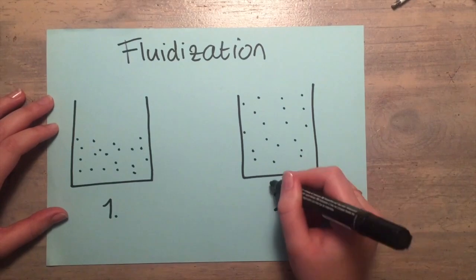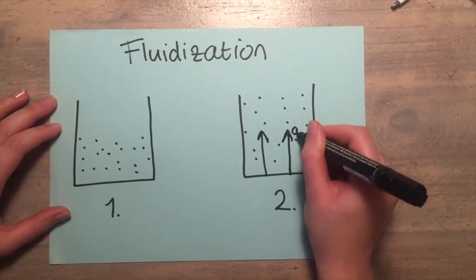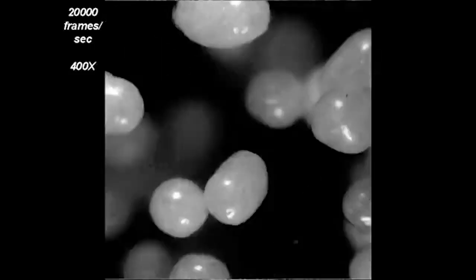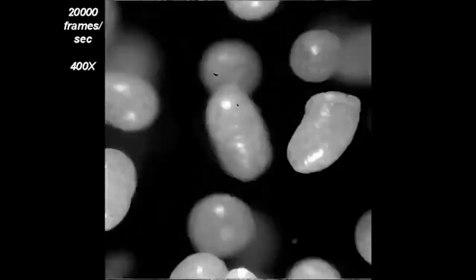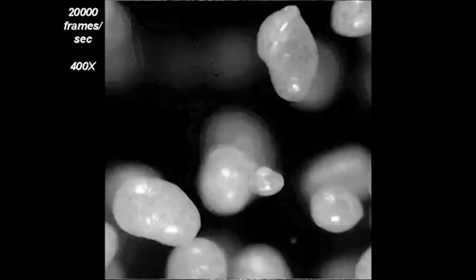A fluidized bed is created when a gas flow is introduced at the bottom of a bed. The gas flow will move upwards through the grains via the empty spaces between the particles. When the velocity is high enough, it will begin to counteract the gravitational forces.